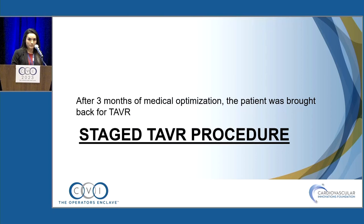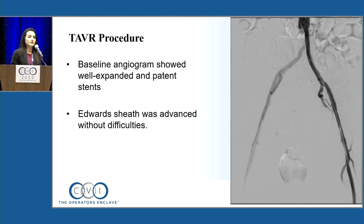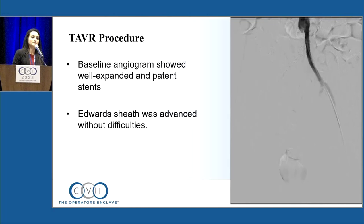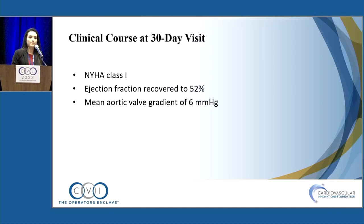In a three-month staged procedure, the patient underwent TAVR. The angiogram prior to the procedure showed the stents were well expanded with good flow, and we were able to advance our equipment via standard transfemoral access through this site. The patient underwent successful implantation of a Sapien 3 26-millimeter valve, well expanded, with normal gradients and improved EF at 30-day follow-up.